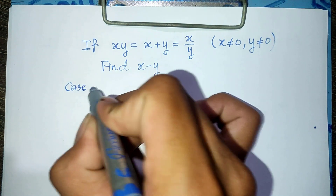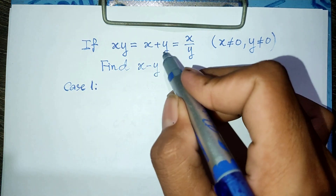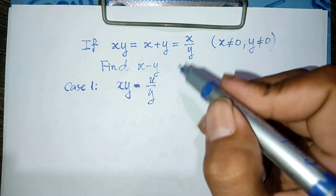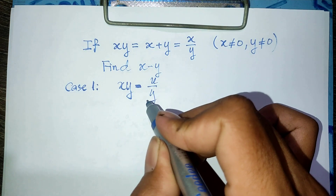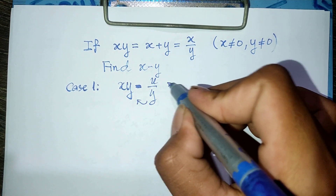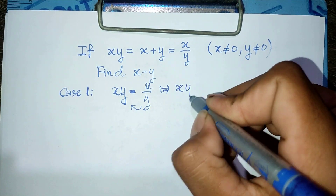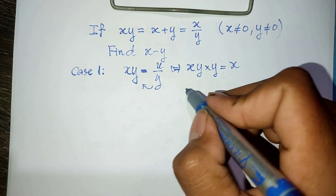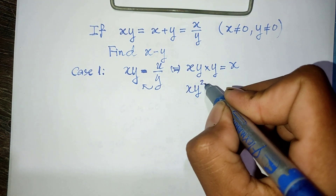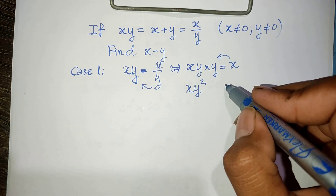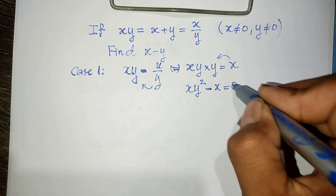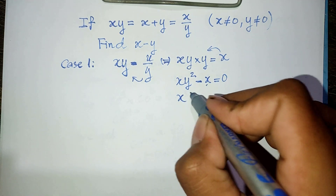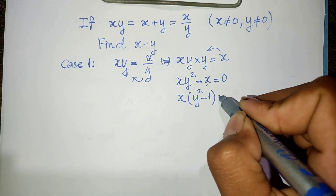Case one: we check h multiplied by y equals h divided by y. Moving h from the right side to the left-hand side, we get h·y multiplied by y equals h. Then this gives h multiplied by y squared. Taking it to the left-hand side we get h·y squared minus h equals zero. Factoring the right-hand side, we get h multiplied by (y squared minus one) equals zero.